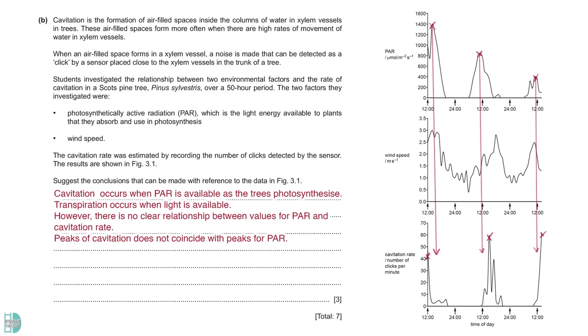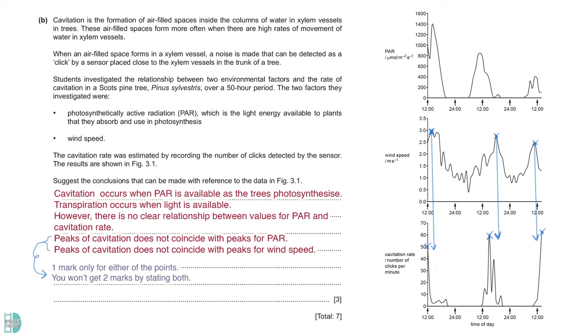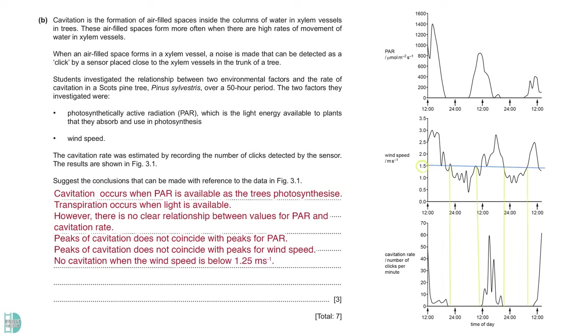However, the values do not show a clear relationship between PAR and cavitation rate. If you check the exact time when the peaks occur, they do not coincide. Now let's check the wind speed graph. Even though the peaks seem to occur around the same time at the first glance, a closer look reveals that they do not coincide. Note that this point and the previous points are considered the same mark. Next, there is no cavitation when the wind speed is below 1.25 m per second. Lastly, when you compare the two factors, PAR affects cavitation rate more than wind speed, as the graphs look more similar.